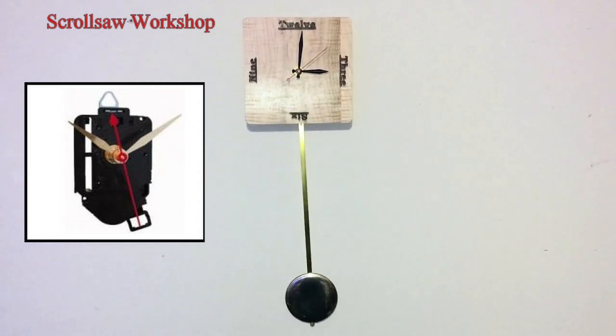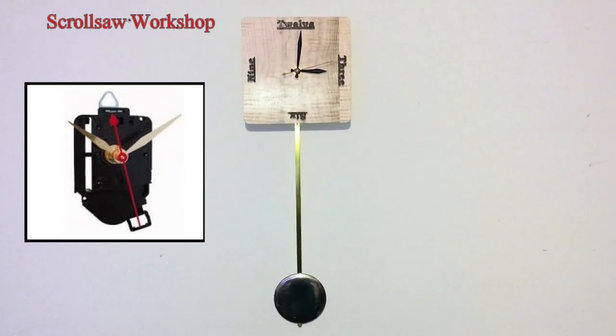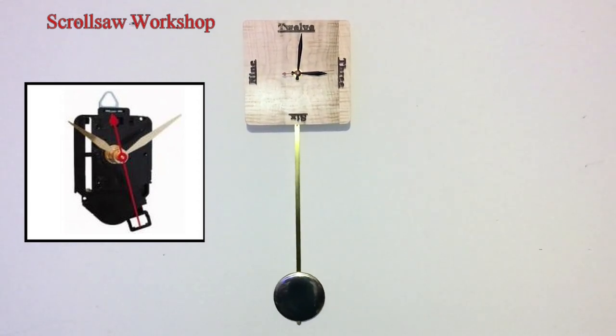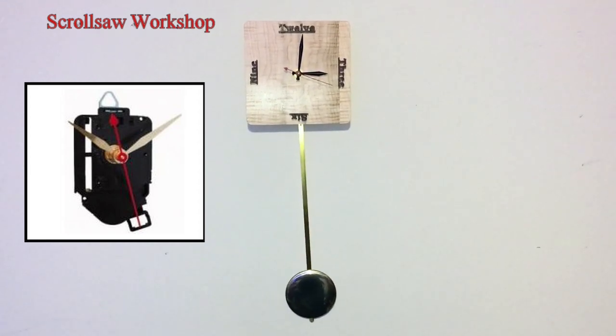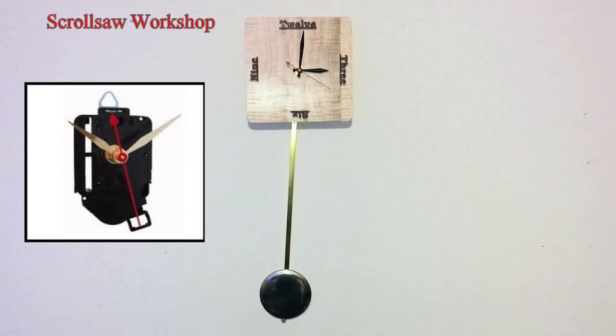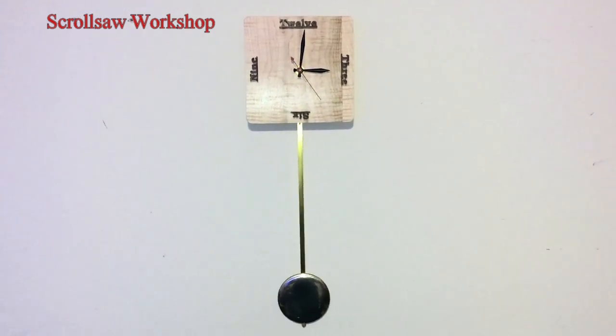It's July 2nd, 2017, and this is a modern take on a Westminster chime clock. It's made out of a quarter inch thick maple and some walnut for lettering. And here's what it sounds like.